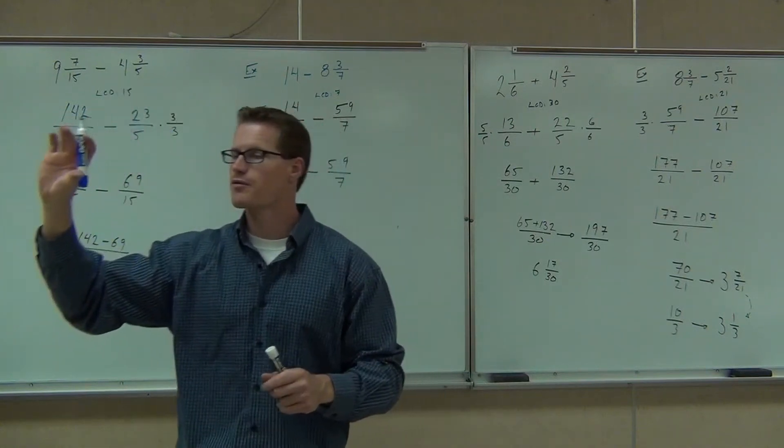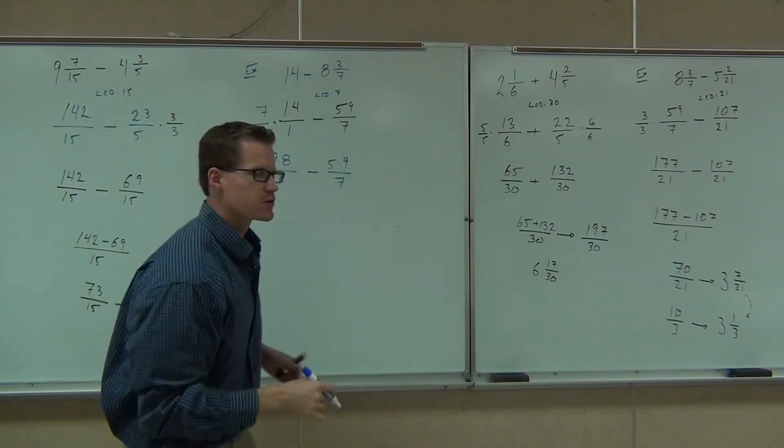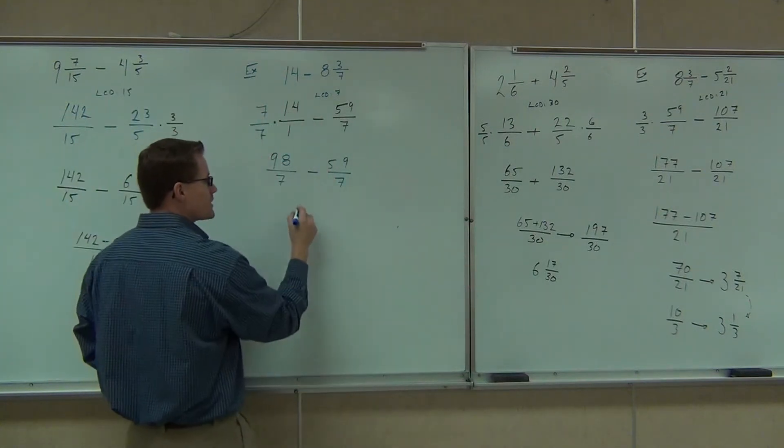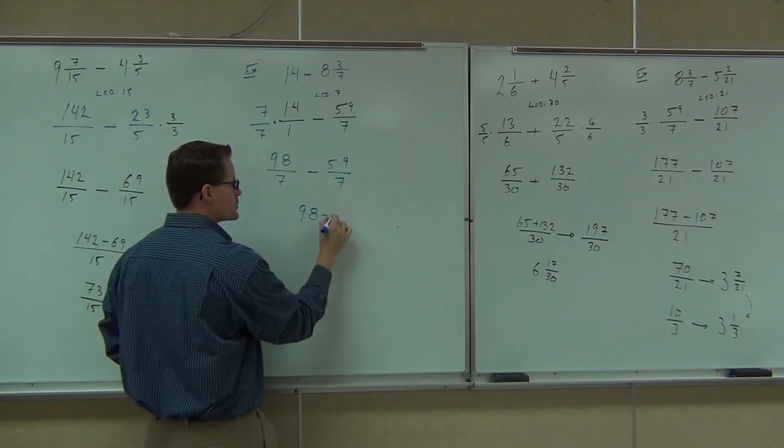We change a whole number to an improper fraction by putting it over 1, then find your LCD. Let's make that into one fraction.